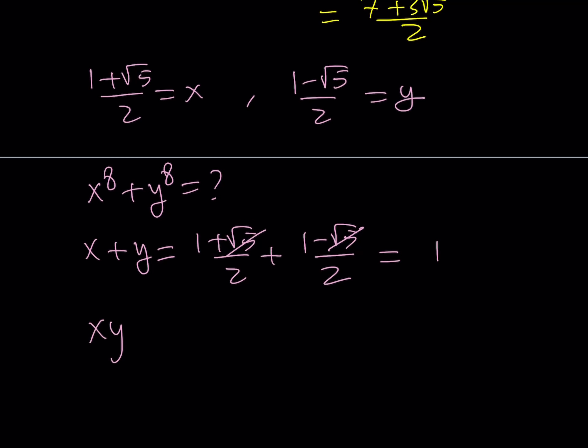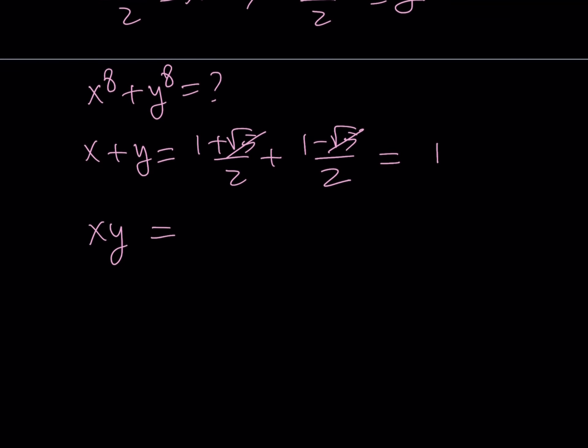And then, also consider xy. If you multiply 1 plus root 5 over 2 and 1 minus root 5 over 2, you can use difference of 2 squares, which is 1 minus 5 divided by 4. As you know, this is negative 4 divided by 4, and that is equal to negative 1.